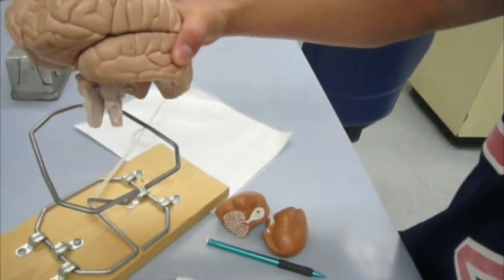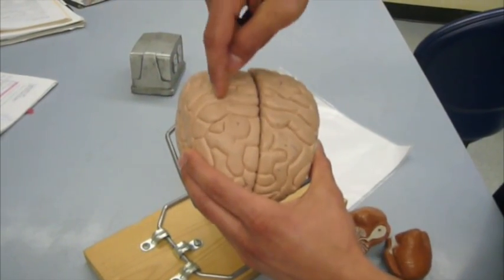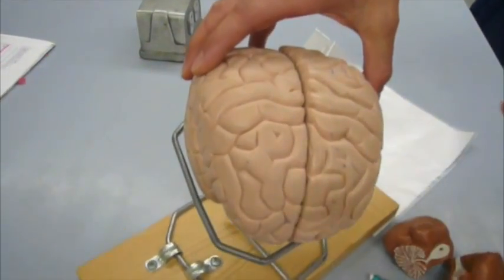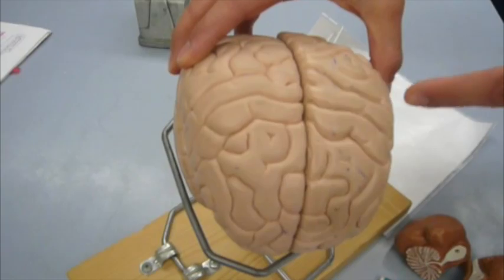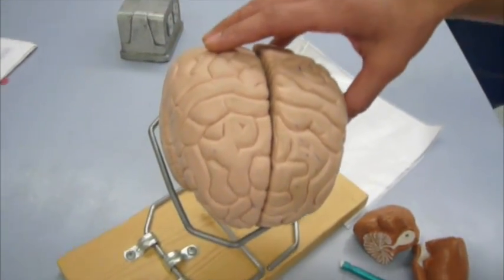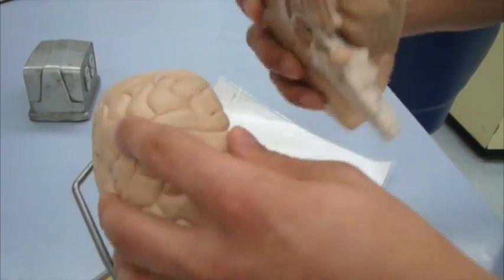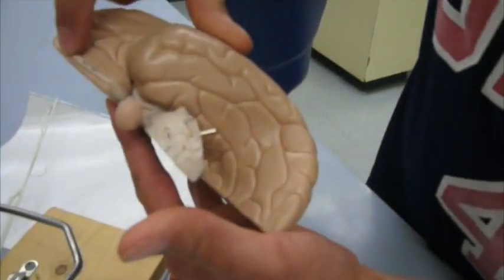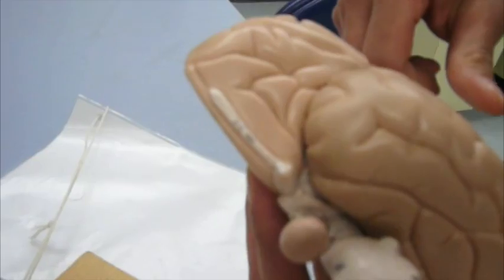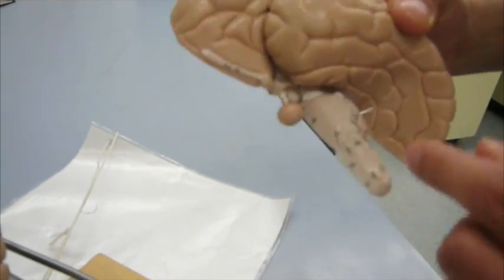Now we have just parts of the brain. We have the gyri, which are the bulges. We have the sulci, which are the grooves. We have the olfactory bulb. It's going to be right here at the end of this olfactory bulb. Pituitary gland.